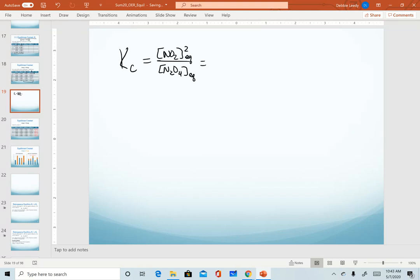For the first trial, we were told that NO2 has a concentration of 0.0125 molar, and that is squared, whereas N2O4 has a concentration of 0.0337 molar, and that is first order.